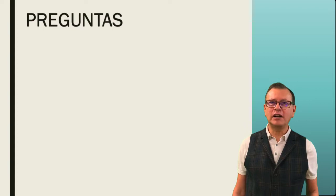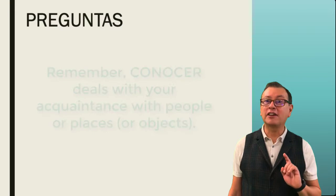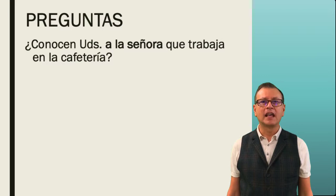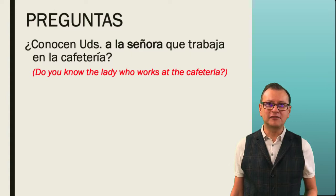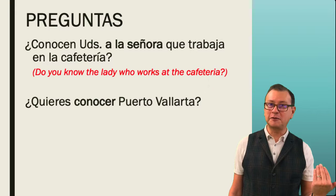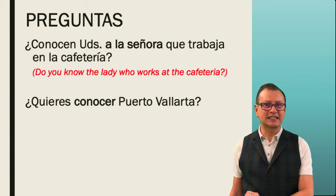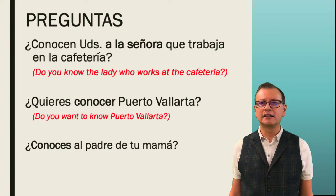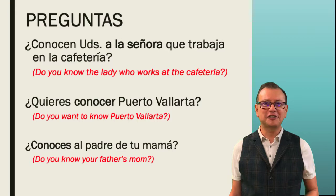Now I'm going to show you questions with the verb conocer. Remember, with conocer I'm going to ask you about acquaintances or if you know places. Are you ready? ¿Conocen ustedes a la señora que trabaja en la cafetería? I'm asking about a particular person — that's why I am using conocer. ¿Quieres conocer Puerto Vallarta? I accompanied this verb with querer. ¿Conoces al padre de tu mamá? This is a particular person I'm inquiring about. That's why we use this verb.